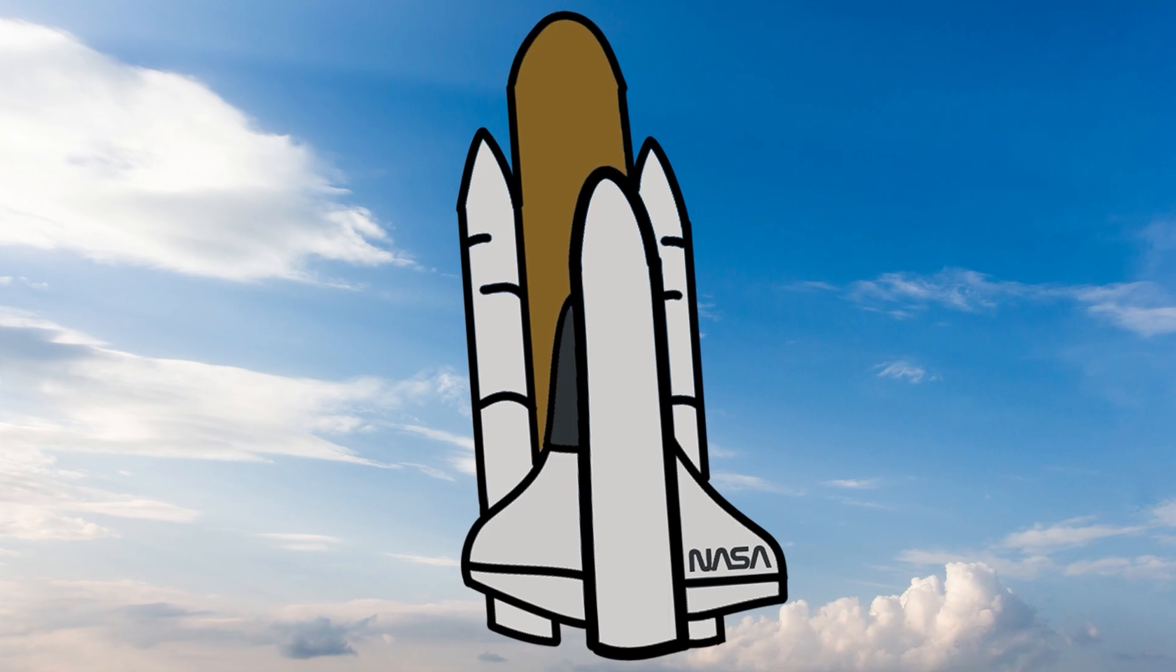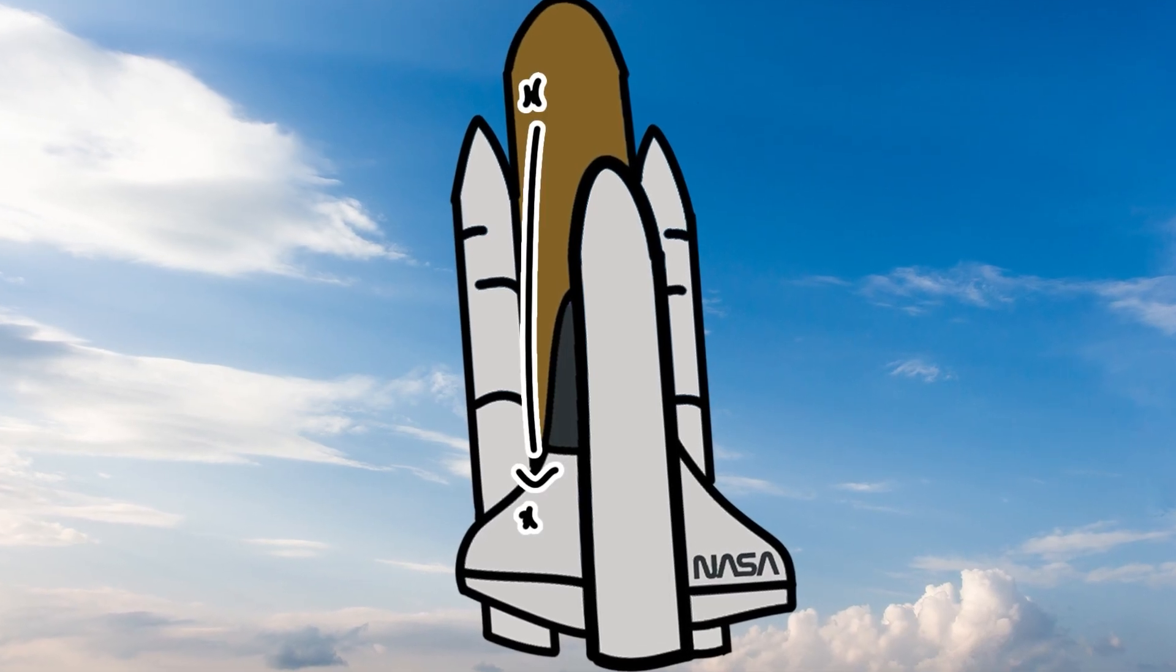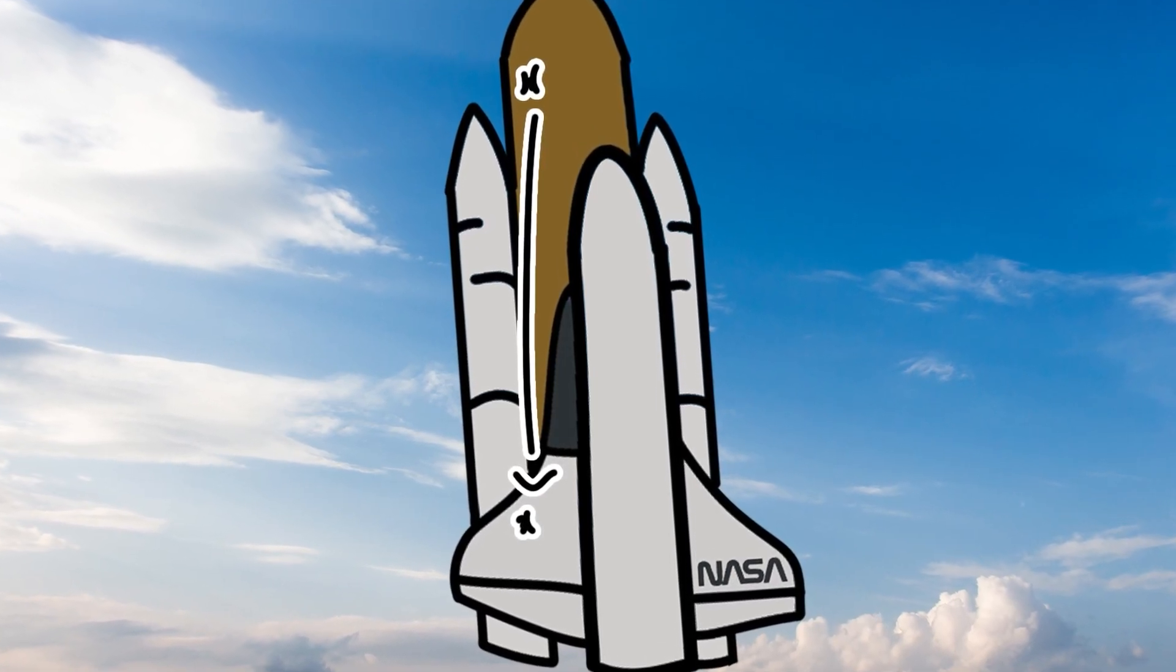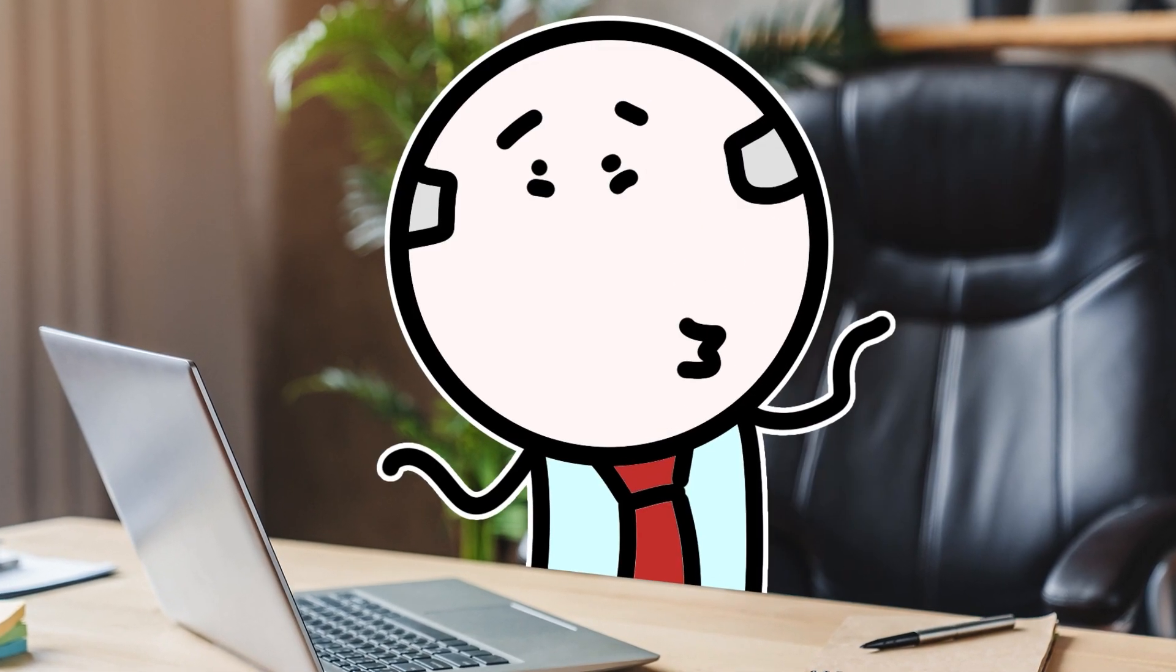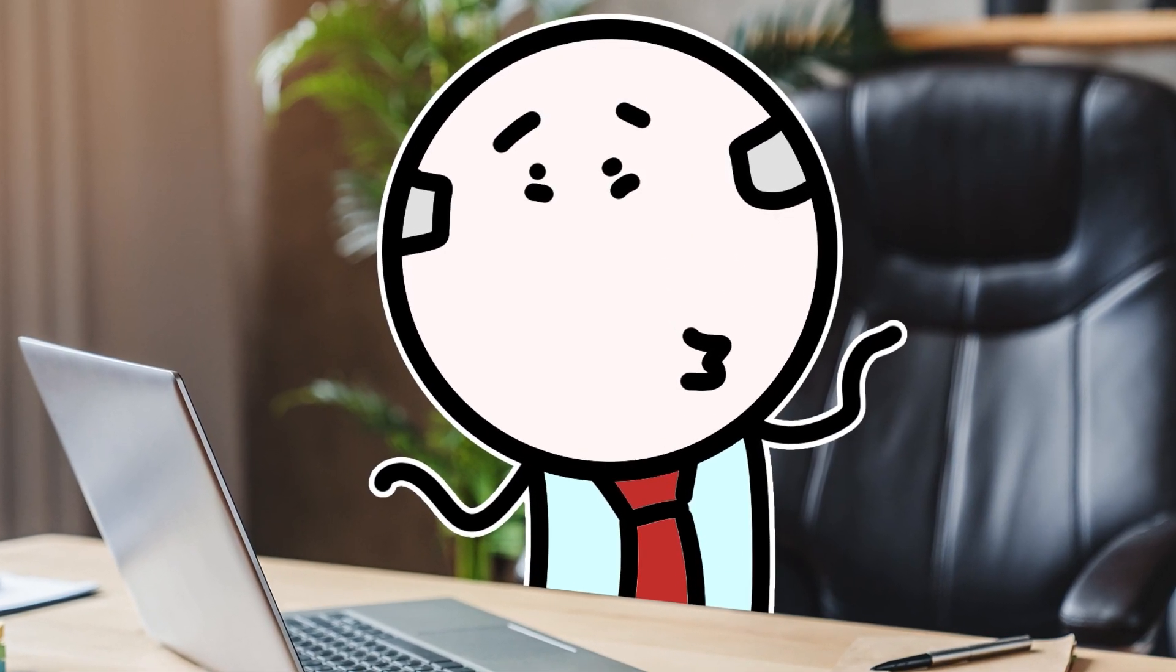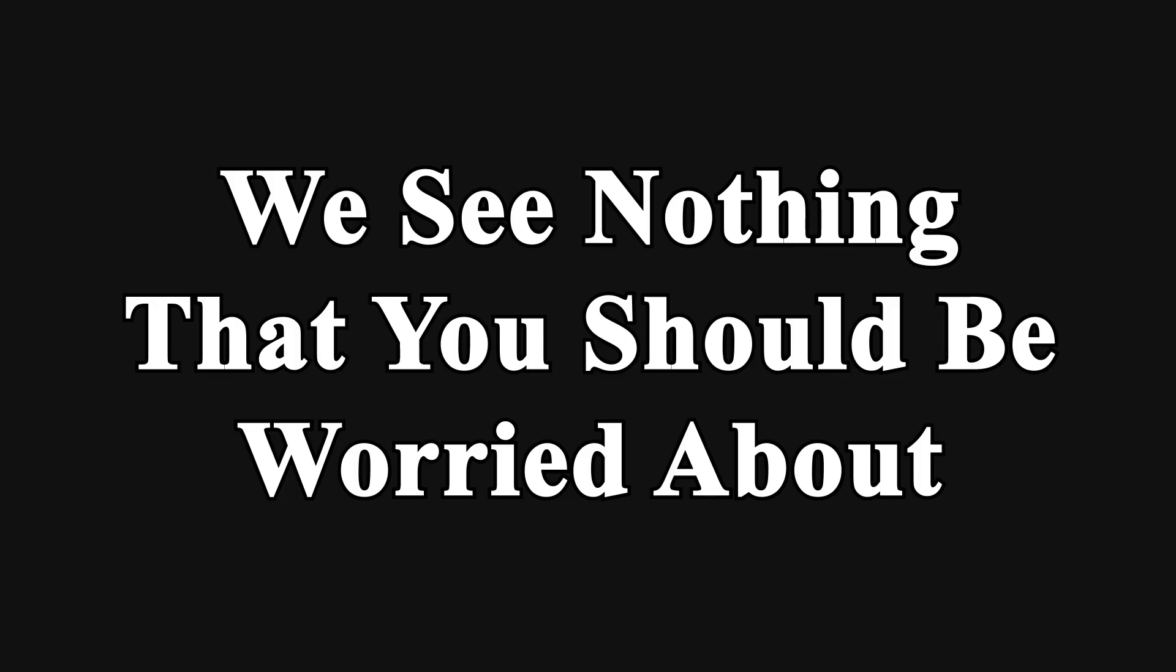During launch, a chunk of foam insulation broke off and punched a hole in the left wing. Engineers noticed this immediately and raised concern, but NASA leadership dismissed it. When the crew asked if there was a problem, they were told, we see nothing that you should be worried about.